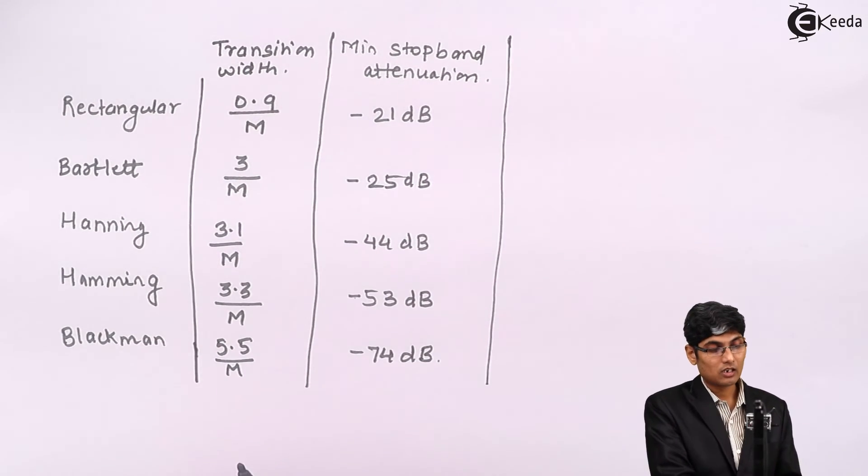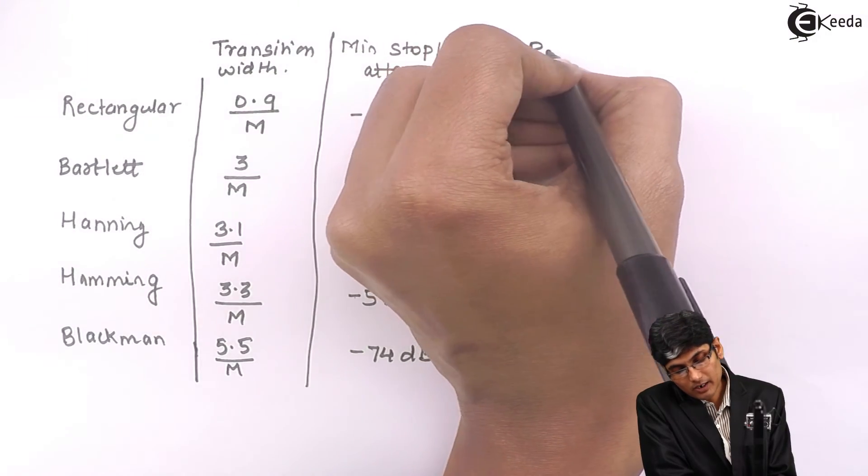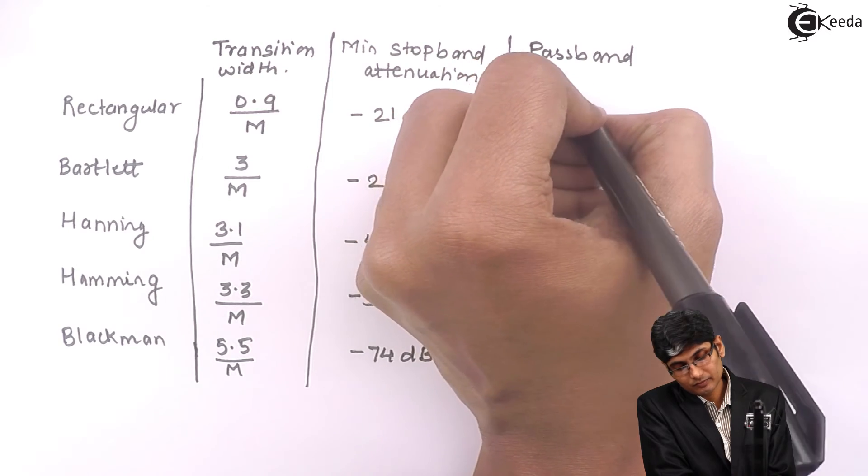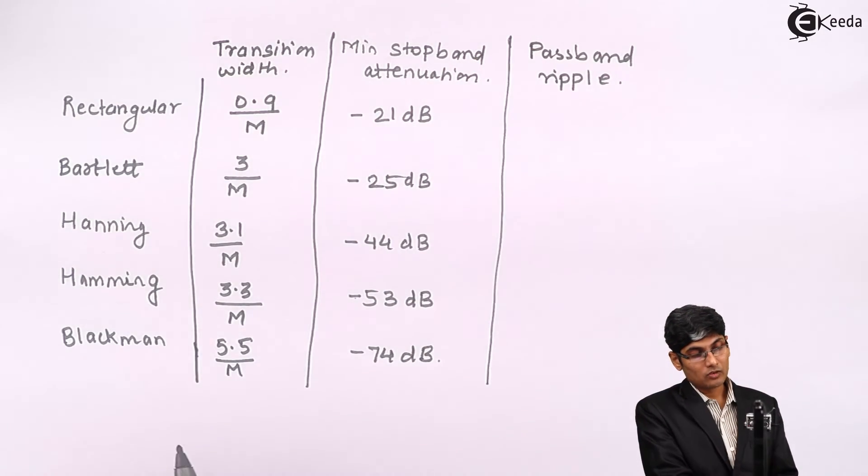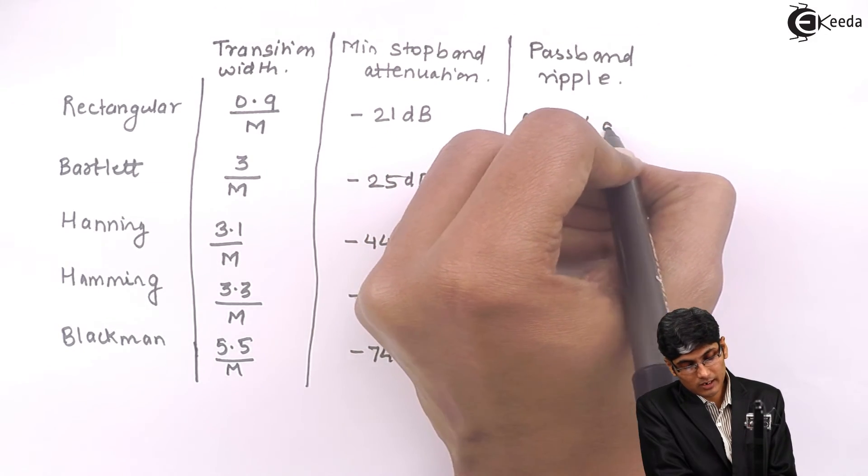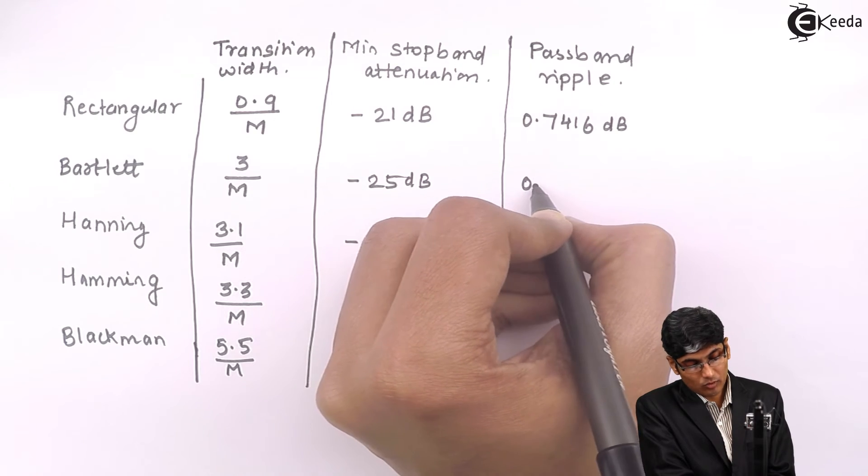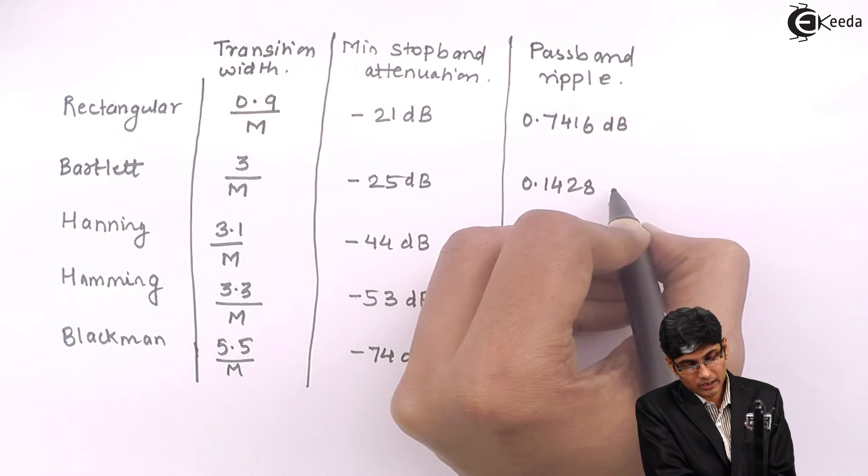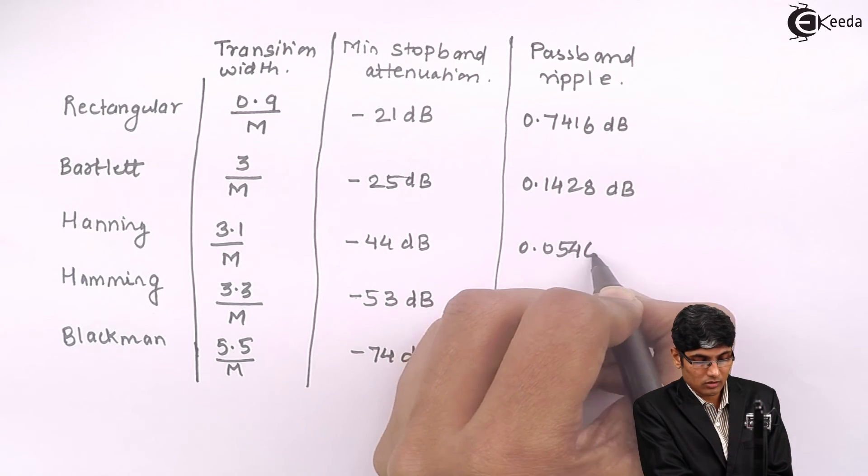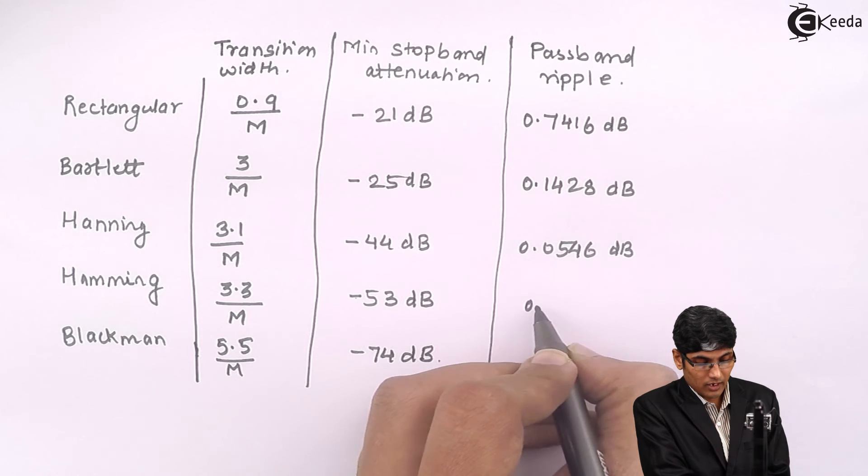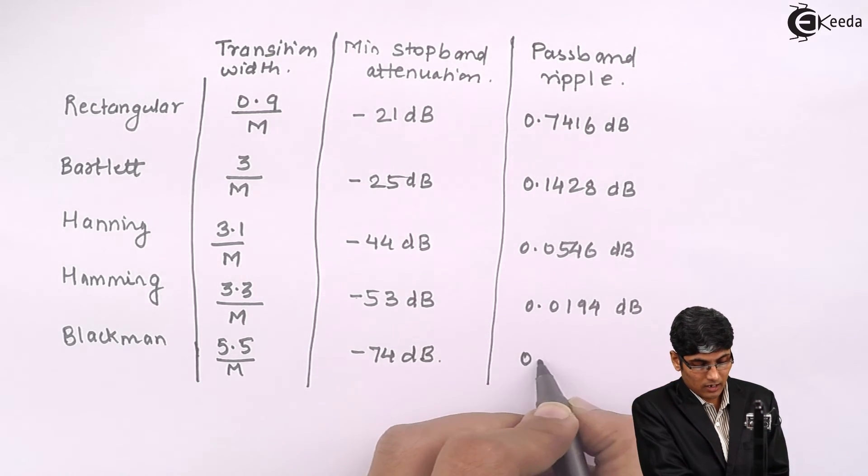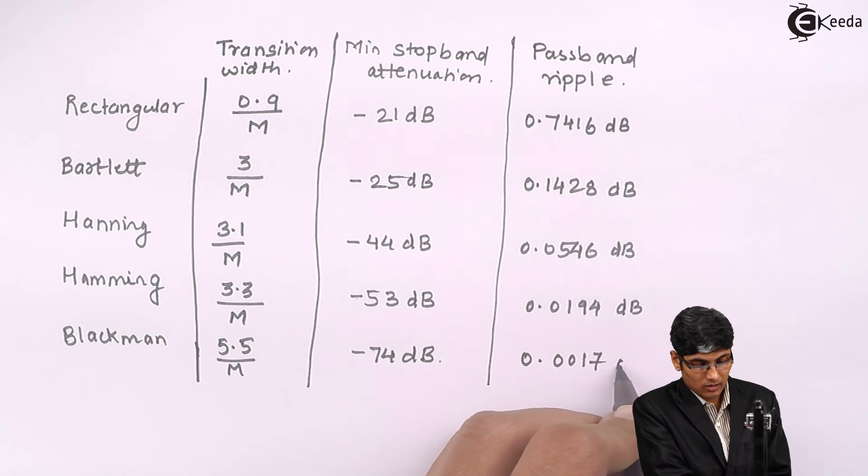The last characteristic is the passband ripple. The value for rectangular window is 0.7416 dB, then we have 0.1428 dB, then we have 0.0546 dB, then we have 0.0194 dB, and lastly we have 0.0617 dB.